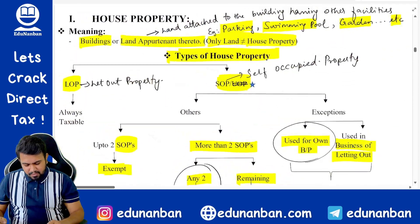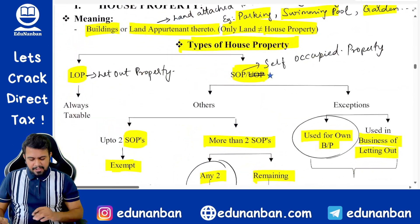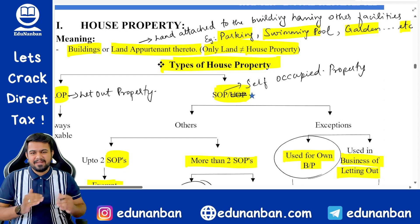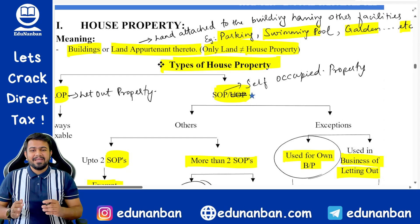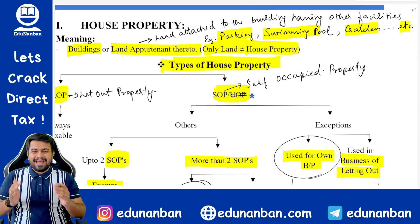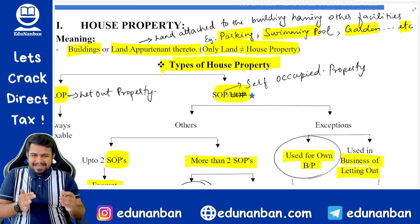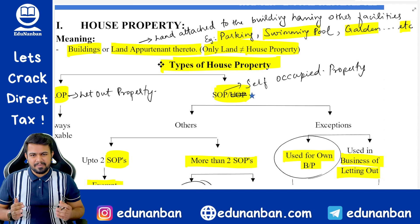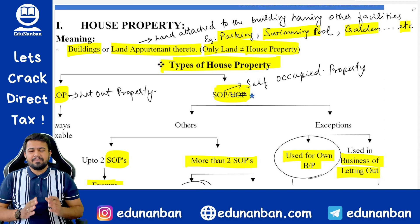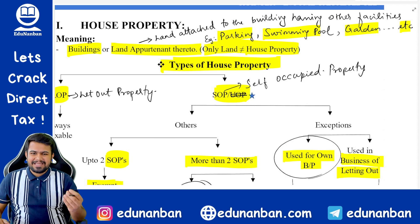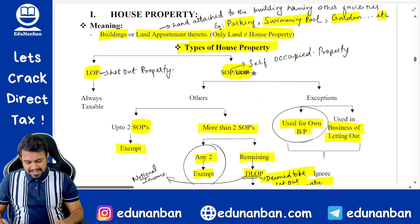House property means building or land appurtenant thereto. Building means permanent structure. Land appurtenant means land, facilities, or features that are attached to the building — for example, parking lot, swimming pool, garden, statues, etc. All these are land appurtenant.